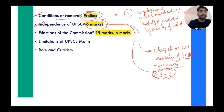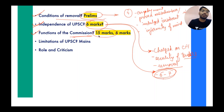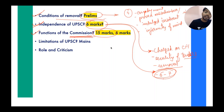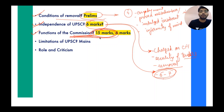For a six-mark question, practice writing a short answer so you can answer questions on independence and functions. Next is functions of UPSC, which is covered in great detail — almost 12 to 13 points in Laxmikant. It covers how appointments are made, examinations conducted while maintaining the merit system, and disciplinary actions — censure, suspension, reduction in rank, removal from services — where UPSC's advice is always sought. Similarly, for state services, UPSC's advice is sought for disciplinary action.